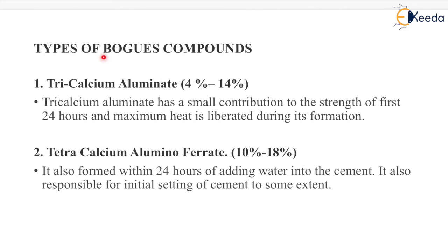Now, types of Bogue's compounds. The first one is tricalcium aluminate, whose percentage varies between 4% to 14%. Tricalcium aluminate has a small contribution to the strength of the first 24 hours, and maximum heat is liberated during its formation.